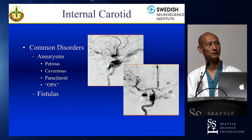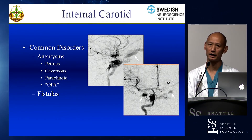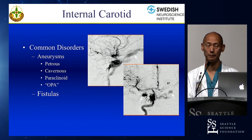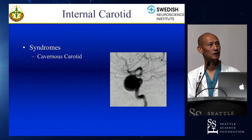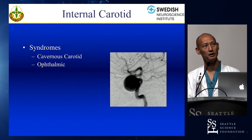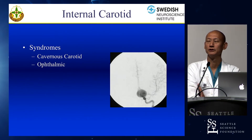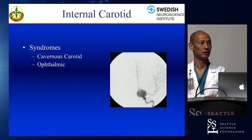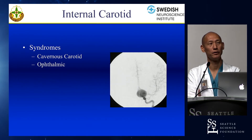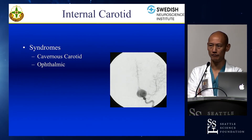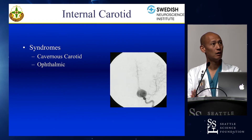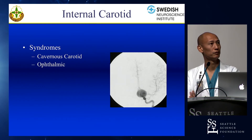Fistulas, for the same reason — as they engorge the cavernous sinus, someone may present with cavernous sinus syndrome. A giant cavernous carotid aneurysm — I would expect a complete ocular motor palsy. Ophthalmic aneurysms can grow quite large and if they grow superior and medially, they can present with visual loss or chiasmopathy — even binocular vision loss — and optic nerve atrophy with long-term compression.